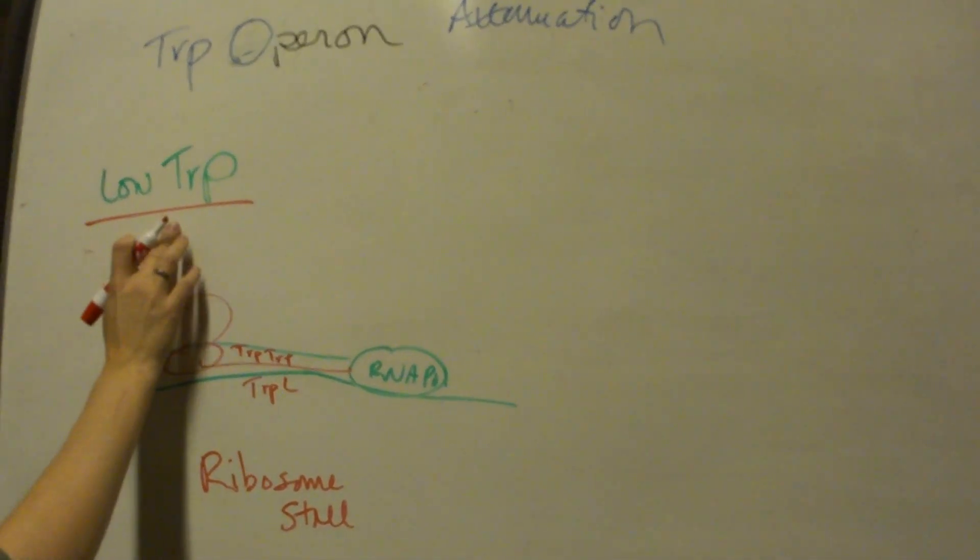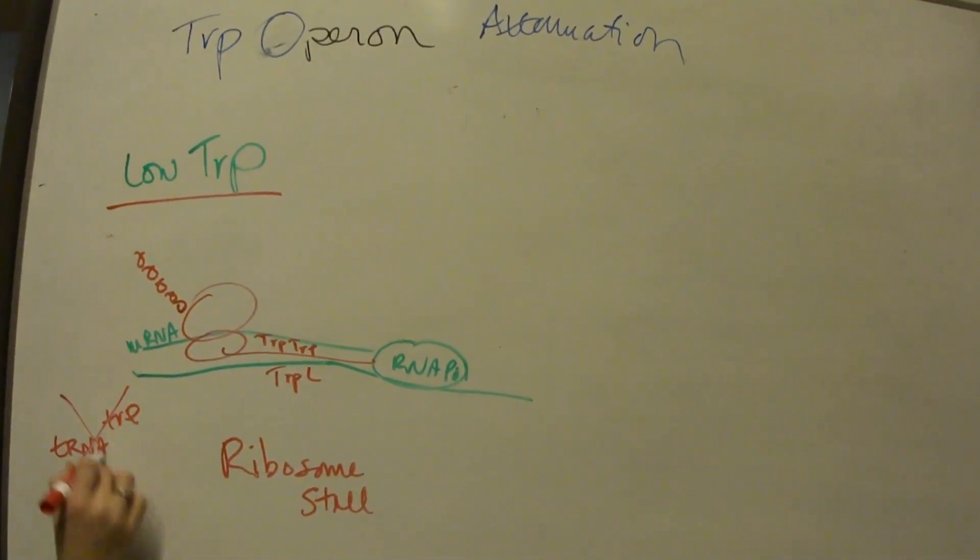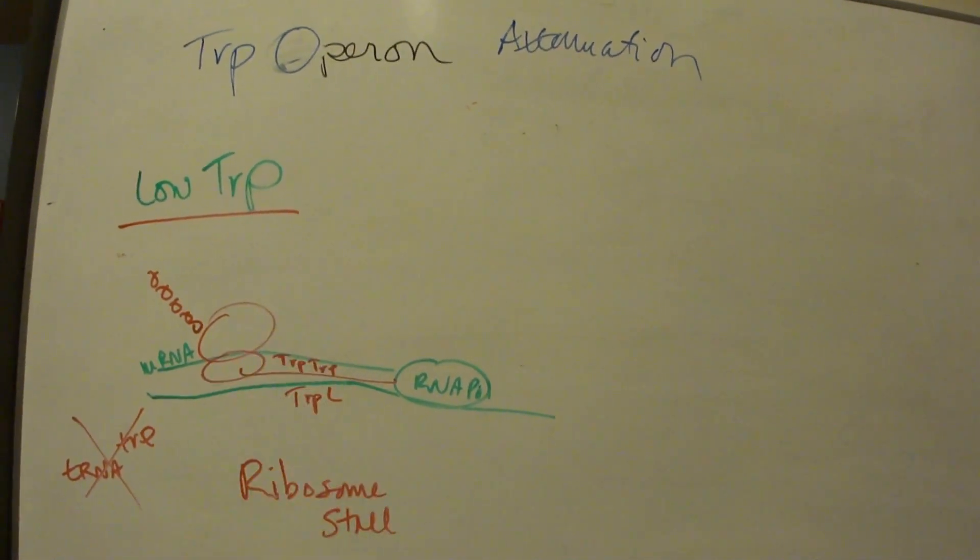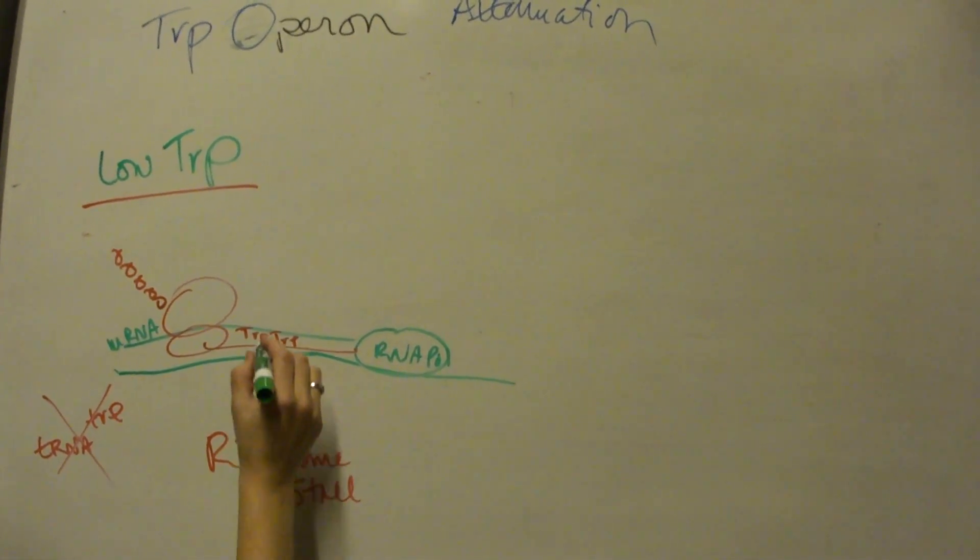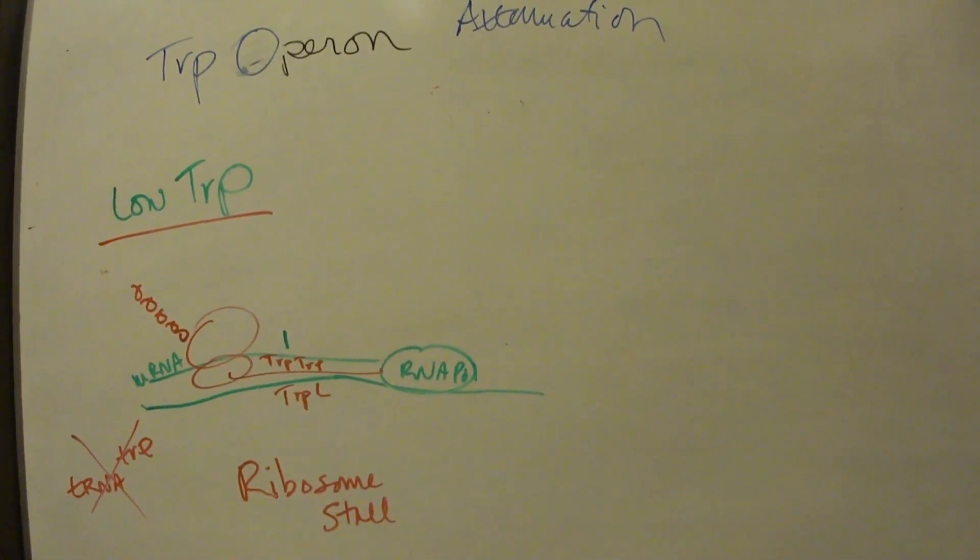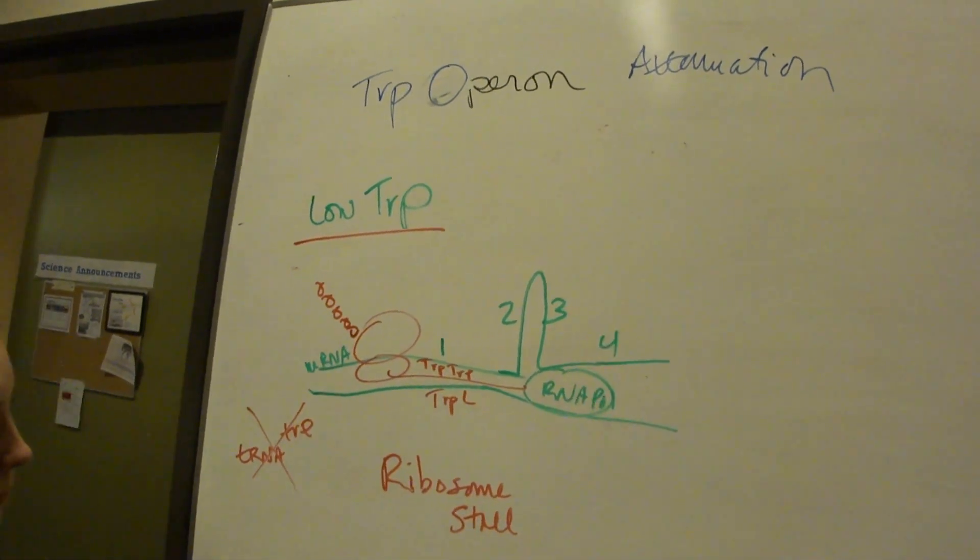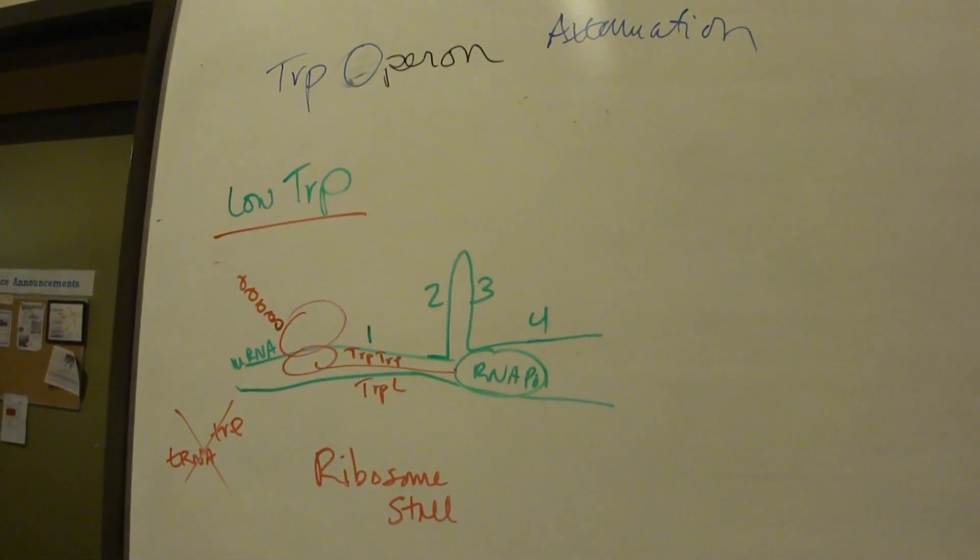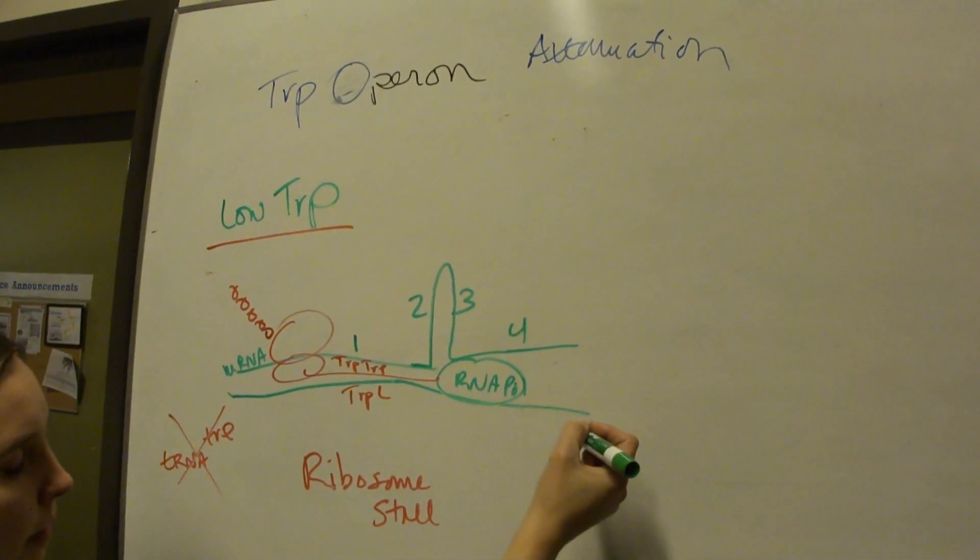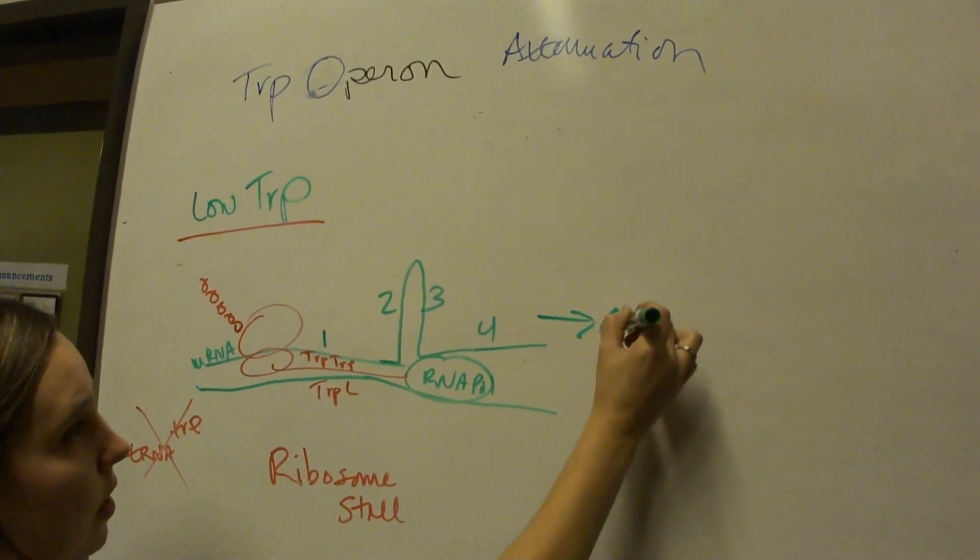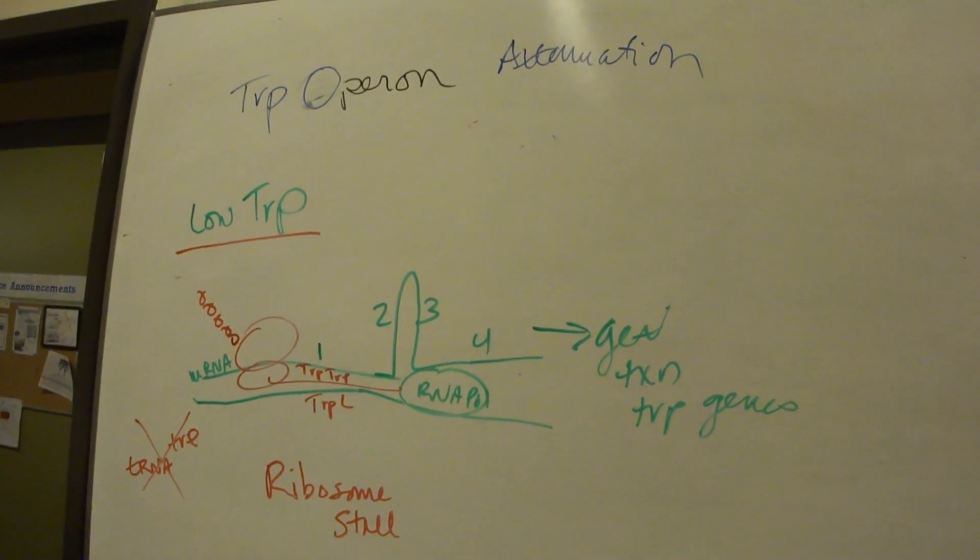The ribosome is going to stall at those trp codons because if you're low on trp, then the tRNA that carries trp is going to be in low amounts too. So there's going to be a delay in getting them to the ribosome. What that delay does is, since that happens in region 1 where those trp codons are, region 2 down here has time to form the 2-3 stem loop.